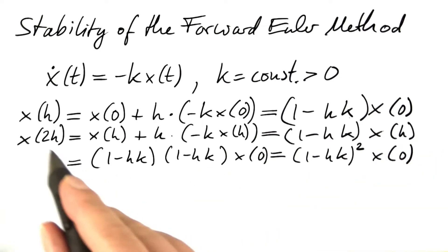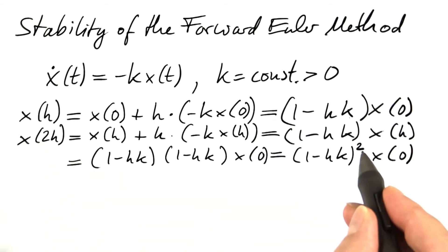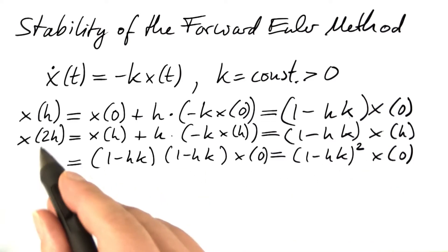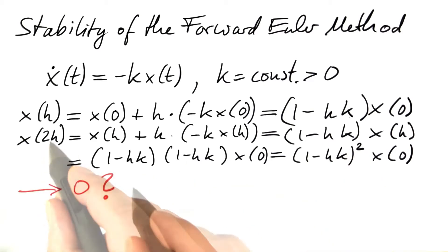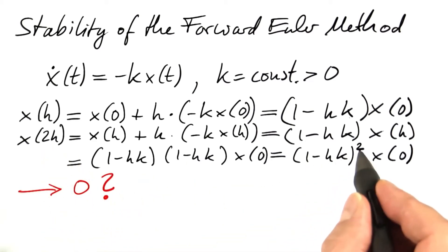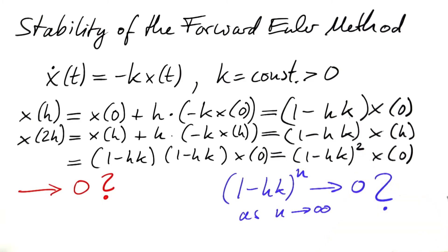And you see how this is going to proceed. If we go to 3h, this will become 4h power of 4 and so on. The question was whether or not x is going to approach zero. This boils down to whether or not 1 minus hk to the nth power approaches zero as n tends to infinity.